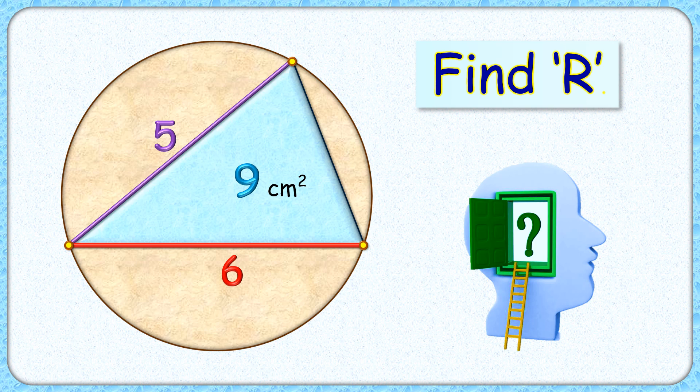Welcome everyone. This interesting question given to us is a triangle with area 9 cm² inside a circle. Two of the side lengths of the triangle are given as 5 and 6 cm. The exciting part is, with this limited data, we have to find the radius of the circle.